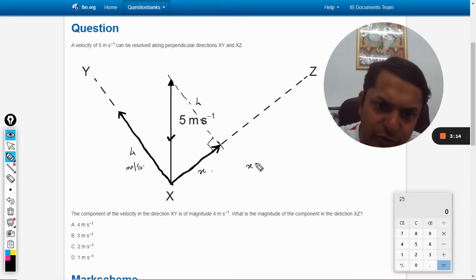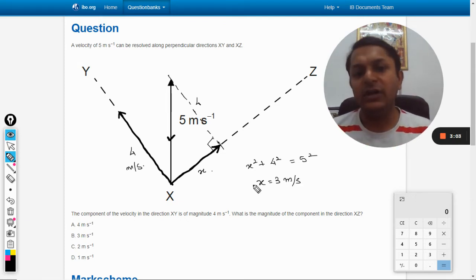By using the Pythagorean theorem here, x² + 4² = 5². On solving, we will find that x is coming out to be 3, and unit will be kept the same, so that will be 3 meters per second.